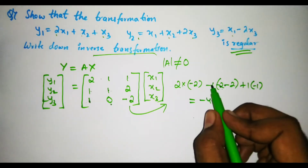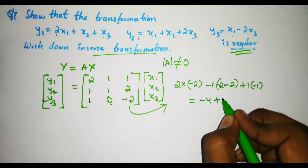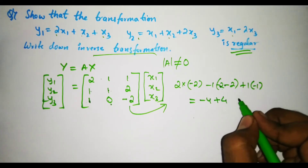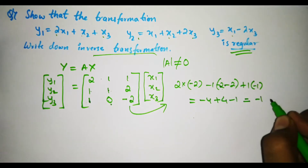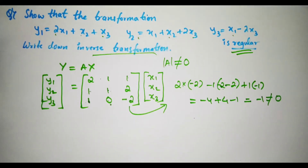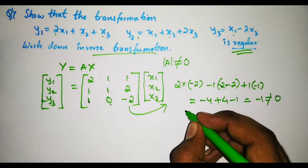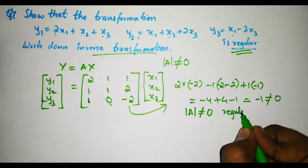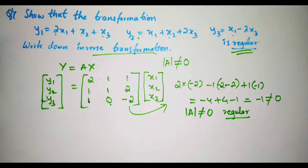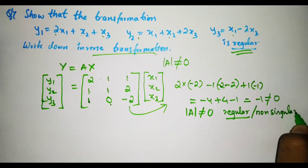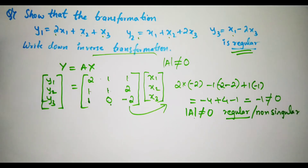So: 2 times minus 2 is minus 4, then minus 2 minus 2 is minus 4, times minus 1 is plus 4, and the last term is minus 1. The answer is minus 1, which is not equal to 0. Hence, determinant A is not equal to 0, so the transformation is regular, or equivalently, the matrix is non-singular.